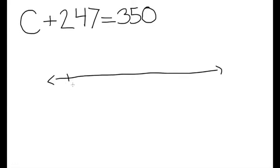Why? Because you are adding, and when you add on a number line, you're going to move toward the right. The next step would be to start from the variable and jump 247 to the right of your variable. After jumping 247 to the right, you will land on 350.